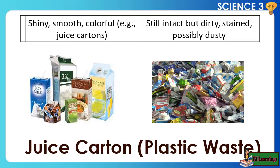Juice carton and plastic waste: Before disposal — shiny, smooth, and colorful. After three days of disposal — still intact but dirty, stained, and possibly dusty.